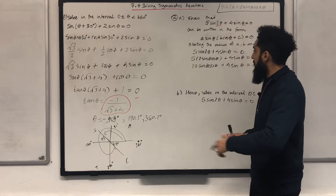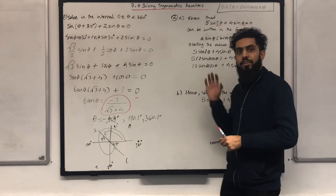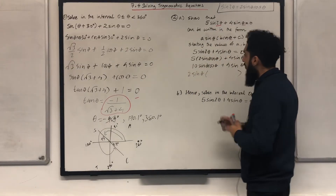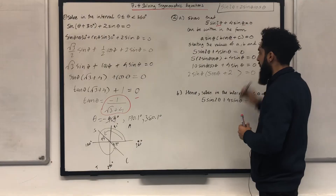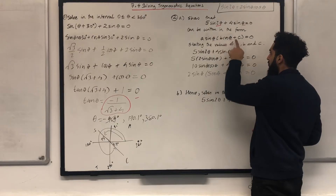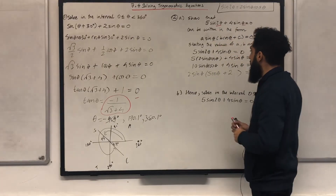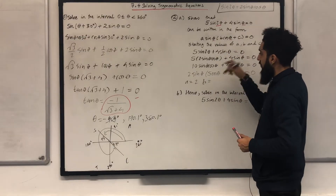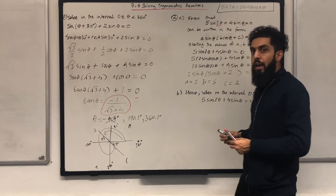This is looking crispy. Between these two terms I have a common factor of 2 sine theta. Taking out 2 sine theta, inside the bracket I obtain 5 cos theta plus 2 equal to 0. That is the form needed — A sine theta in bracket B cos theta plus C equal to 0. Reading off the values: A is equal to 2, B is equal to 5, C is equal to 2. That completes part A.